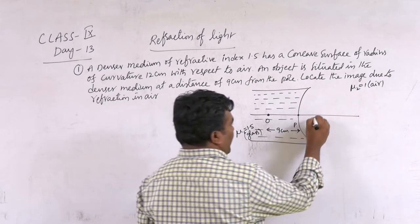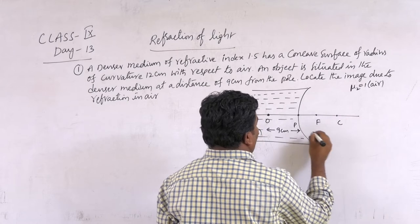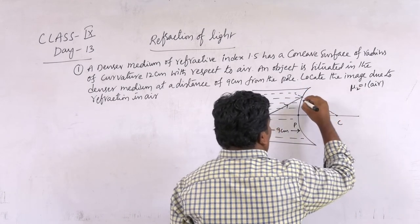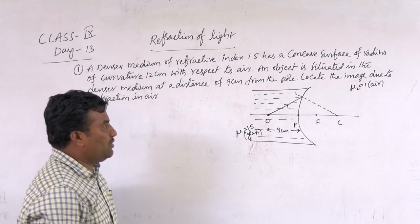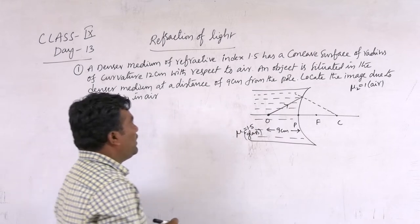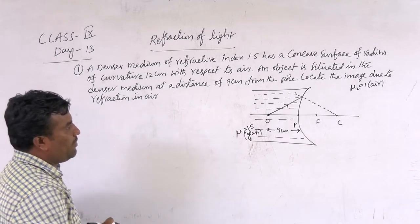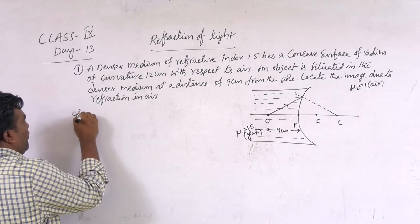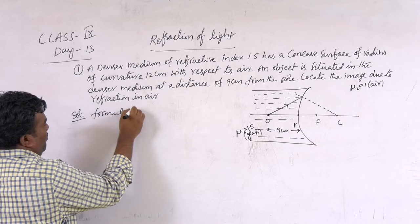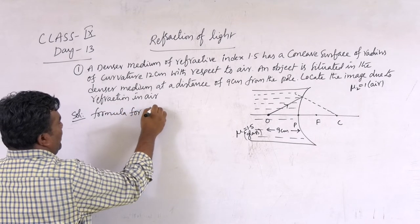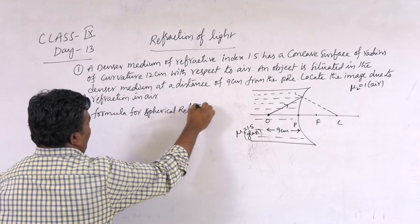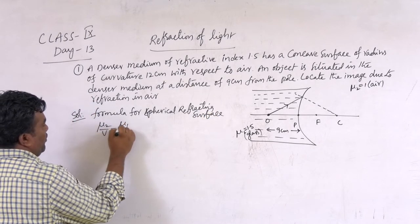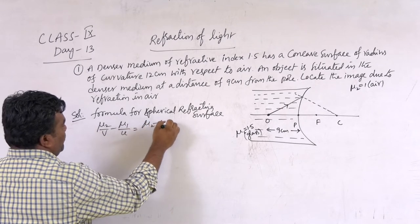9 cm from cone. Here we can take the focus and here we can take the curvature. The light ray falls on the surface. Now we are reading what I did — distance. Locate the image due to refraction in the air. We can find out here. That's why I am taking the first surface. The formula for spherical refracting surface: μ2/V minus μ1/U = (μ2 minus μ1)/R.